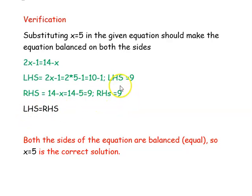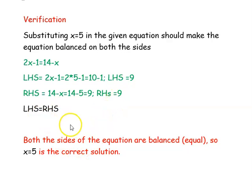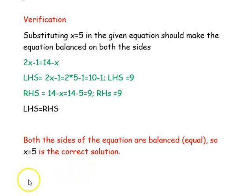We are seeing here that left hand side is equal to right hand side. We can conclude that the equation is balanced and x equal to 5 is the correct solution to the given equation.